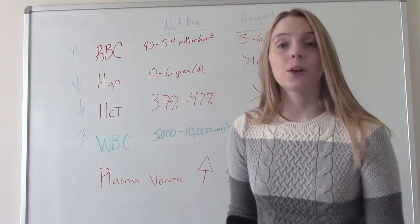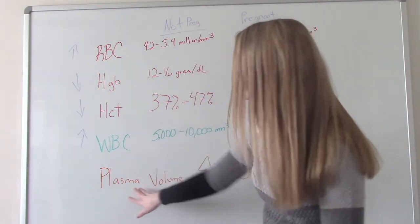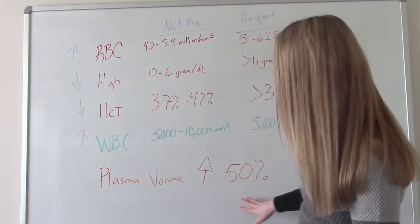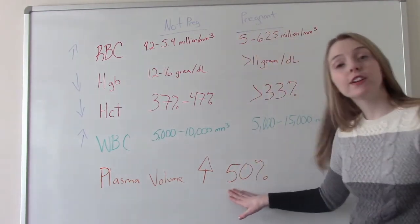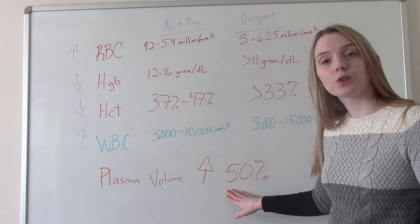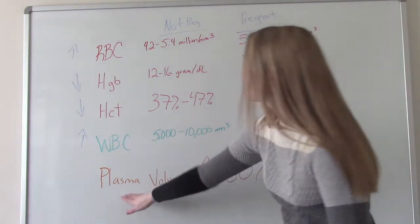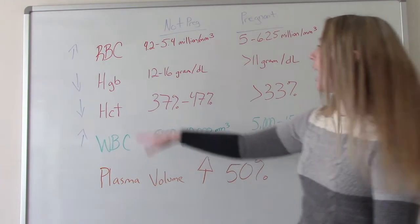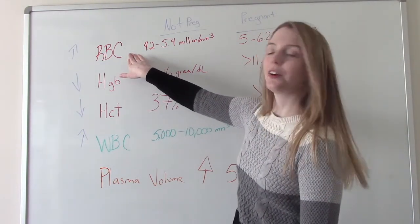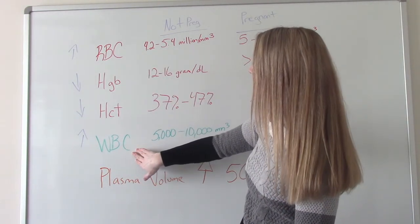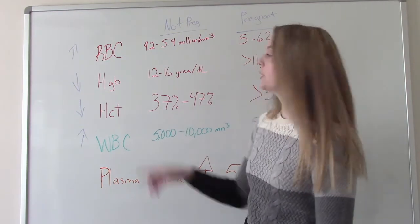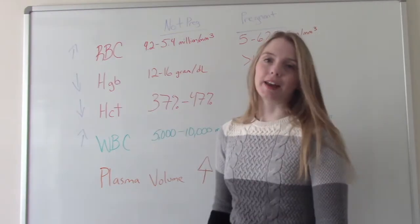And the last thing I wanted to point out is our plasma volume will increase, and look how much it's going to increase, by 50%. If you think about that, that's crazy, right? Our plasma volume is going to increase, our red blood cell count is going to increase, our white blood cell count is going to increase, and then the things that decrease are hemoglobin and our hematocrit.